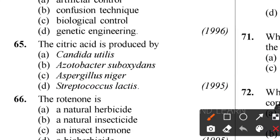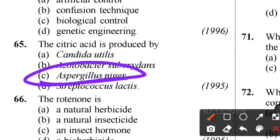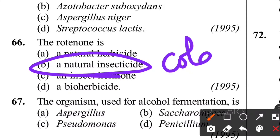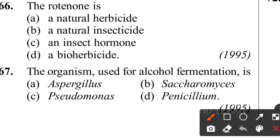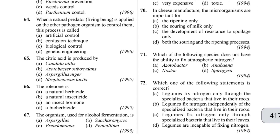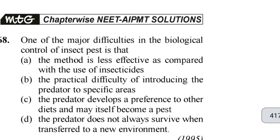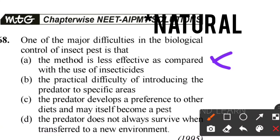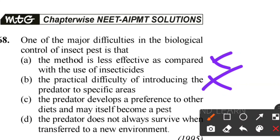Sixty-fifth question: citric acid is produced by Aspergillus niger - option C. Sixty-sixth question: what is rotenone? Rotenone is a natural insecticide obtained from the roots of some plants called Derris. It is toxic for cold-blooded animals but harmless for warm-blooded animals. Sixty-seventh question: the organism used for alcohol fermentation is Saccharomyces - very easy. Sixty-eighth question: the major difficulty in biological control of insects is that predators do not survive when transferred to a new environment - option D is the correct answer.